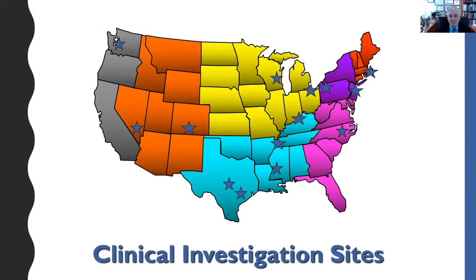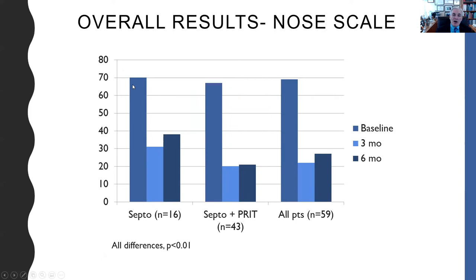These were the 14 clinical investigation sites with a nice geographic spread across the United States. The results showed that patients started off with high scores on the NOSE instrument and had significant improvement at three months and six months. They did a little bit better if they had septoplasty with partial reduction of the inferior turbinate. Although this is not a randomized controlled trial and doesn't include a sham arm, it does demonstrate using a validated instrument that nasal septoplasty, with or without turbinate reduction, results in significant improvement in the patient's subjective nasal obstruction.